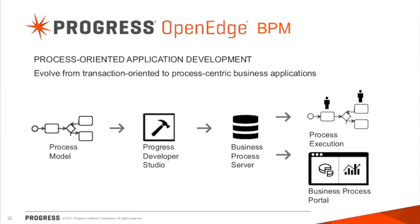One of the other things to keep in mind is that Corticon also integrates with the OpenEdge business process management capability. When you look at a BPM environment, a rules engine is one of the key components of that tool set. If you've developed a process model and defined what the process is, and if-then rules are required, the integration happens at both the business process server and the Corticon server. We've made sure these tools integrate so that anyone looking to do next-generation development, taking advantage of the BPM and business process modeler and process server, can have the rules engine come into play as well.